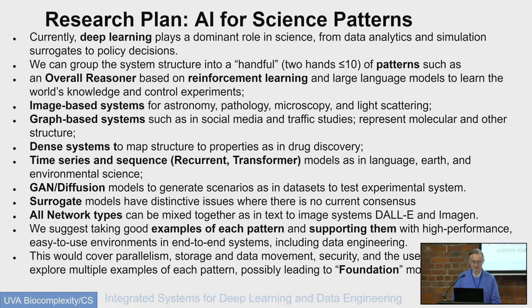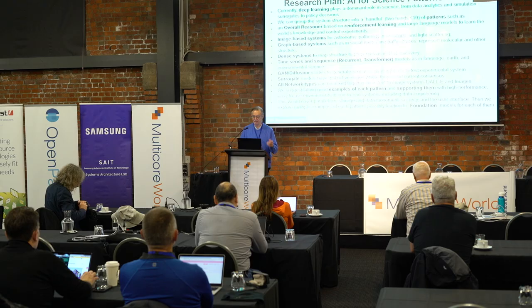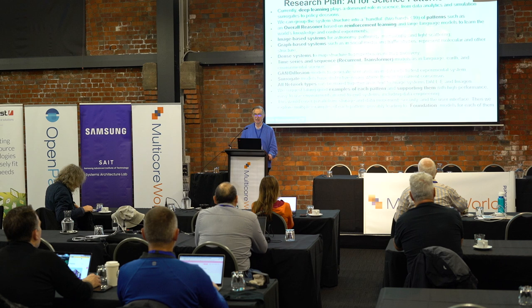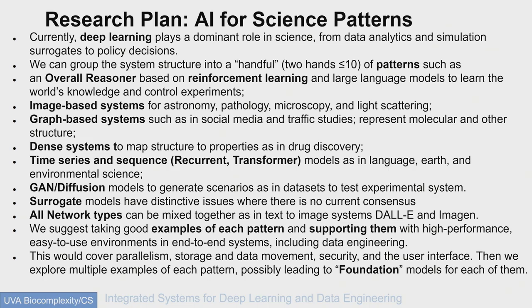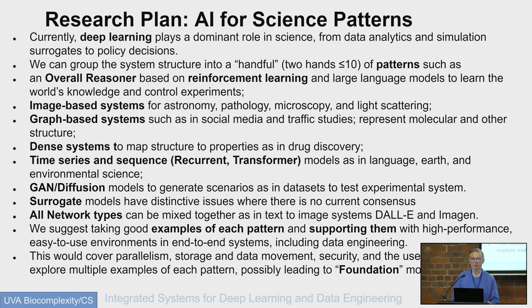I read all those chapters and tried to write down all the things they needed, and you can find motifs or patterns of the AI. They're rather obvious: images, graphs, dense systems, time series, diffusion models, surrogate models. You could imagine building foundation models that cover those particular patterns, and then they could be applicable to all fields.